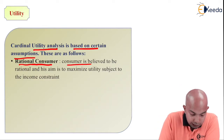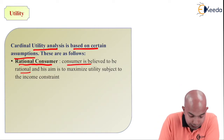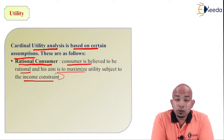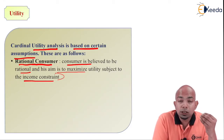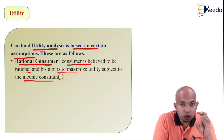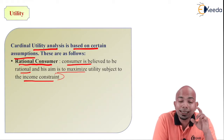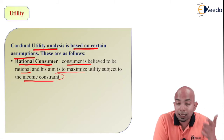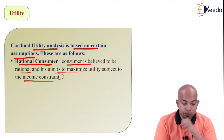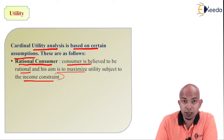The consumer is believed to be rational and his aim is to maximize utility subject to the income constraint. With this assumption, we assume that the aim of the customer is to maximize his utility within the income constraint. Whatever money he has, within that, he has to have maximum satisfaction — maximum utility is his need. This is the first assumption.